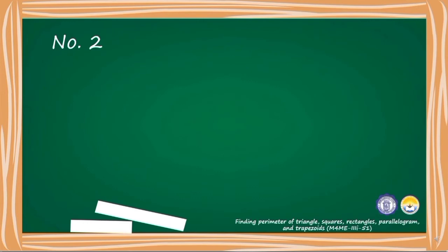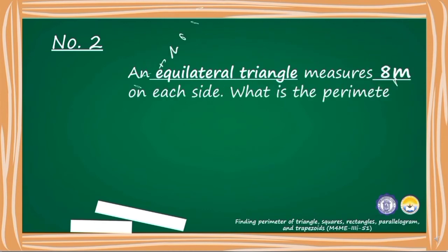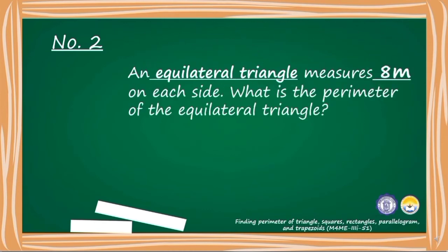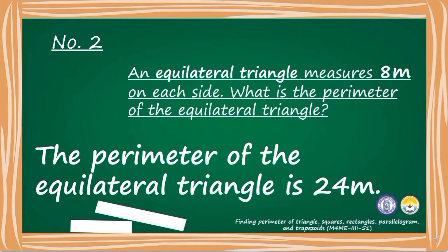Activity number 2: An equilateral triangle measures 8 meters on each side. What is the perimeter of the equilateral triangle? The perimeter of the equilateral triangle is 24 meters.